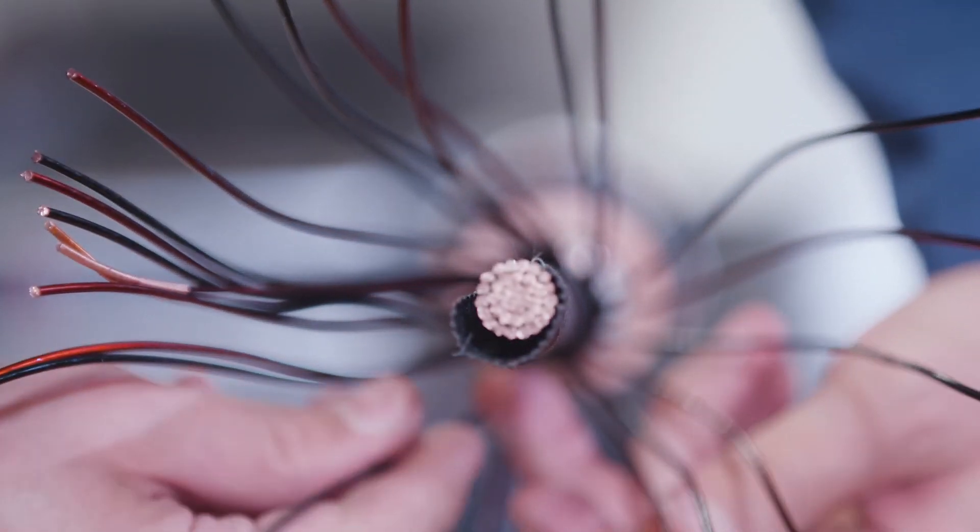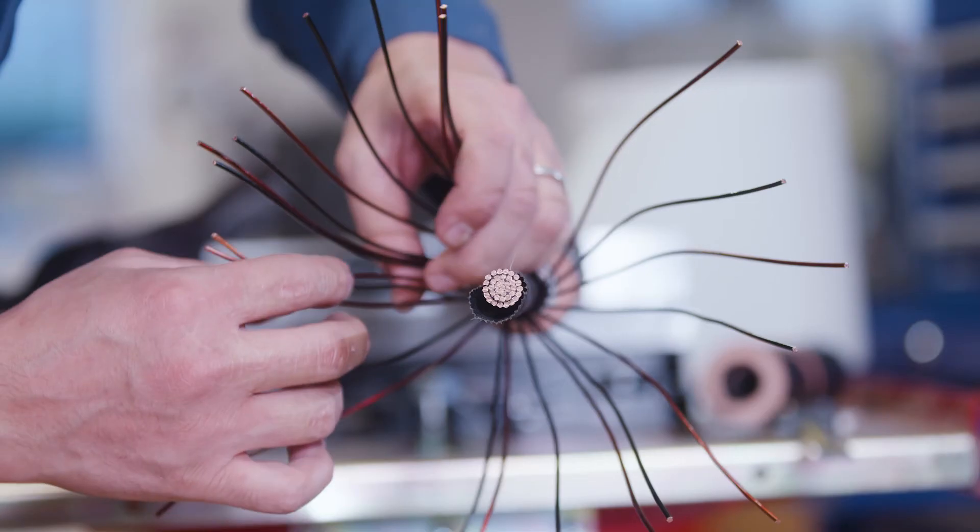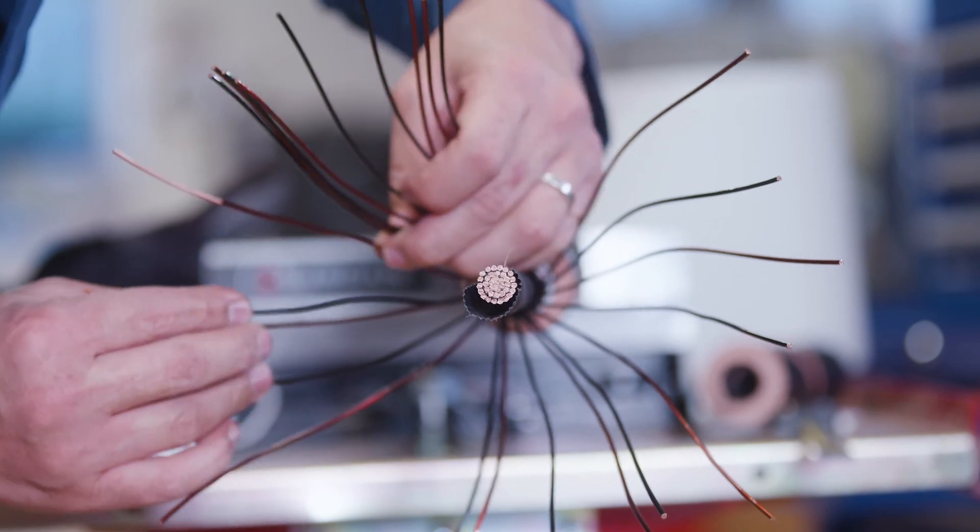If the capacitive transfer system cable is deployed at scale, we will immediately see greater grid stability, lower losses, and lower carbon emissions.